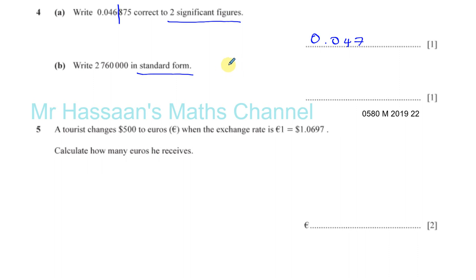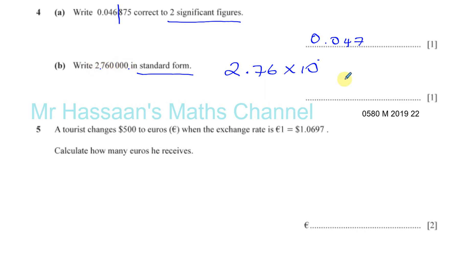Now standard form: the number should be written with one digit before the decimal point, multiplied by 10 to the power of something. You look for the first non-zero digit, which is 2, giving 2.76. Then you count how many places the decimal point has to move to return to its original position: 1, 2, 3, 4, 5, 6. So it's 2.76 times 10 to the power of 6.